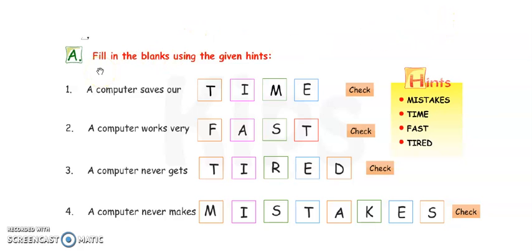Now exercise 1, fill in the blanks using the given hints. These are the hints, you can choose from these options. First, a computer saves our time. Answer is time. Spelling of time, T-I-M-E.